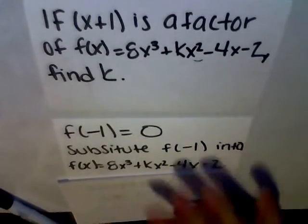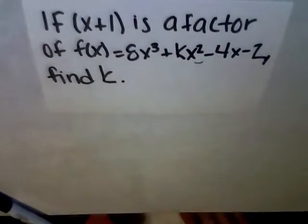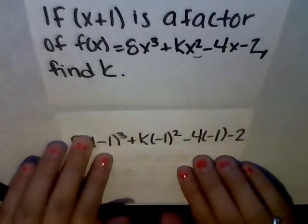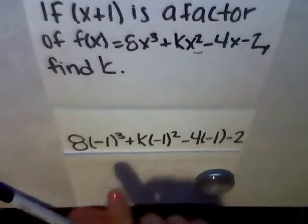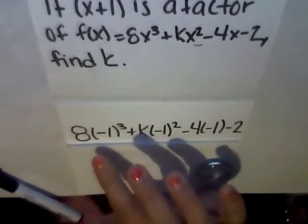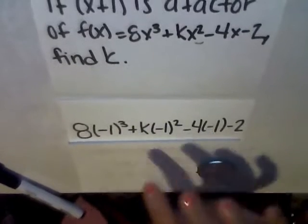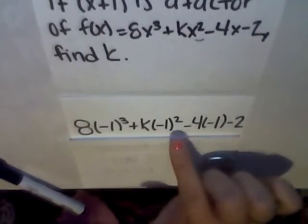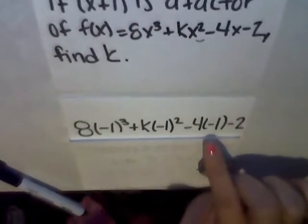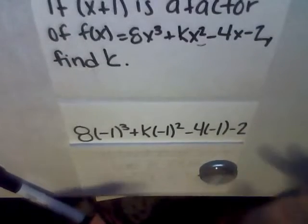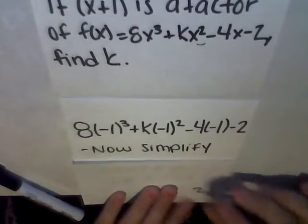So, it's going to be f of negative 1, that's negative 1 to the third power plus k times negative 1 to the second power minus 4 times negative 1 minus 2. So, now, all we have to do is simplify.